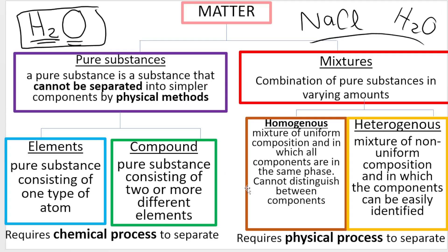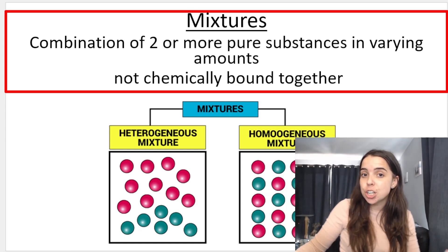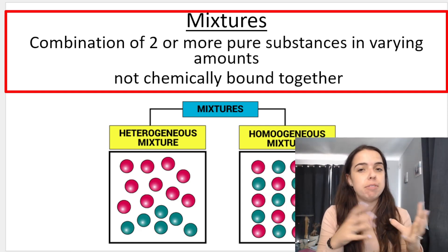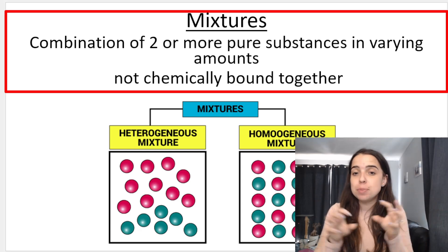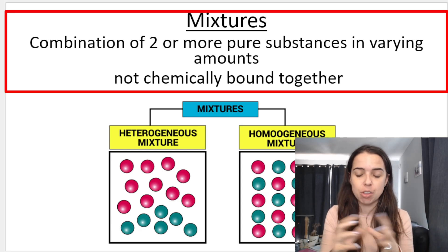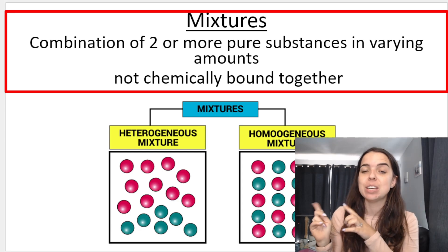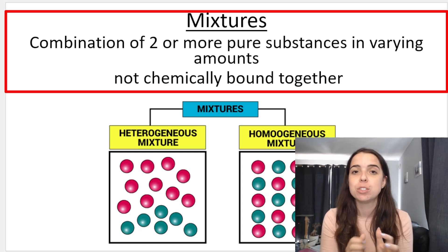I showed in the previous video how that flow diagram broke into this more detailed one, and in this diagram you can see the definitions of homogeneous and heterogeneous mixtures. So what is a mixture? A mixture is a combination of two or more pure substances in varying amounts and they're not chemically bound together. What this means is I can take a bunch of pure substances — whether these are elements or compounds or molecules — and mix them together. That gives me a mixture.